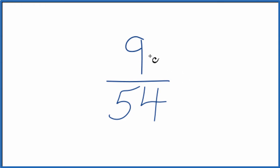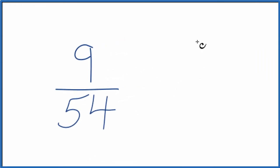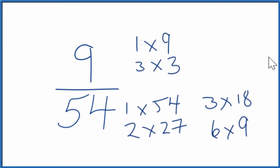To do that, we need to find the factors for 9 and 54. So here are the factors for 9 and 54. When we look at the factors for 9 and 54, we're looking for a common factor, the greatest common factor.